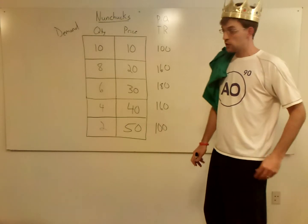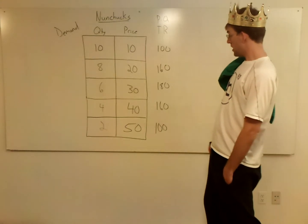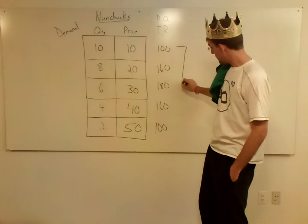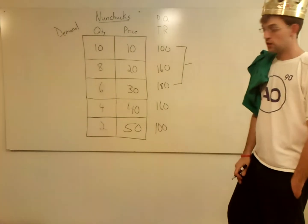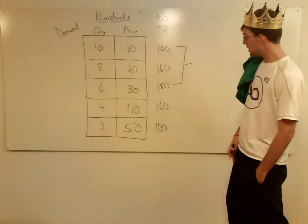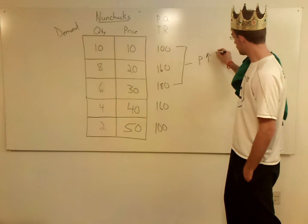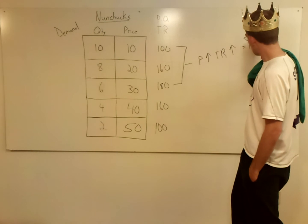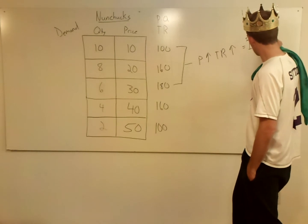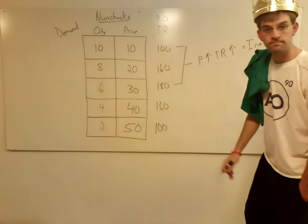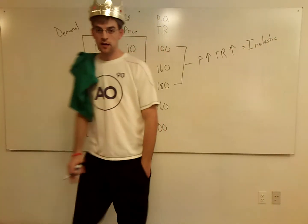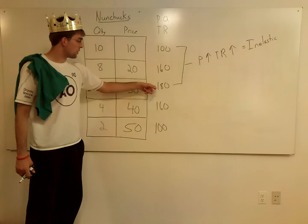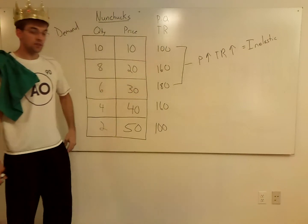Let's apply this to nunchucks. Looking from 10 to 30 in this stretch, the price went from 10 to 30 — the price went up. Total revenue went from 100 to 180 — it went up. Price and total revenue move in the same direction, so this equals inelastic. You can think about it in reverse too: price down from 30 to 10, total revenue down from 180 to 100 — still inelastic.